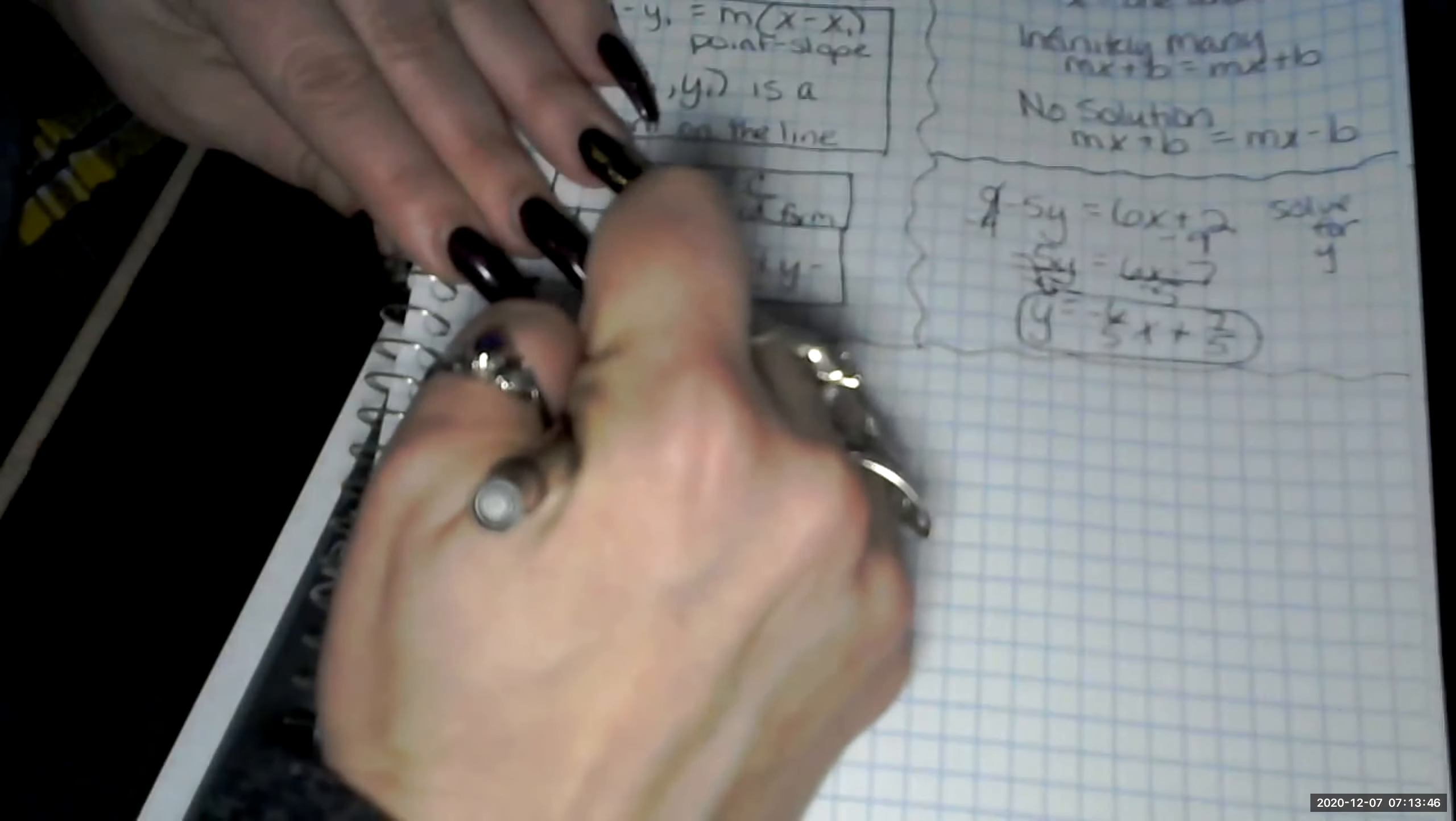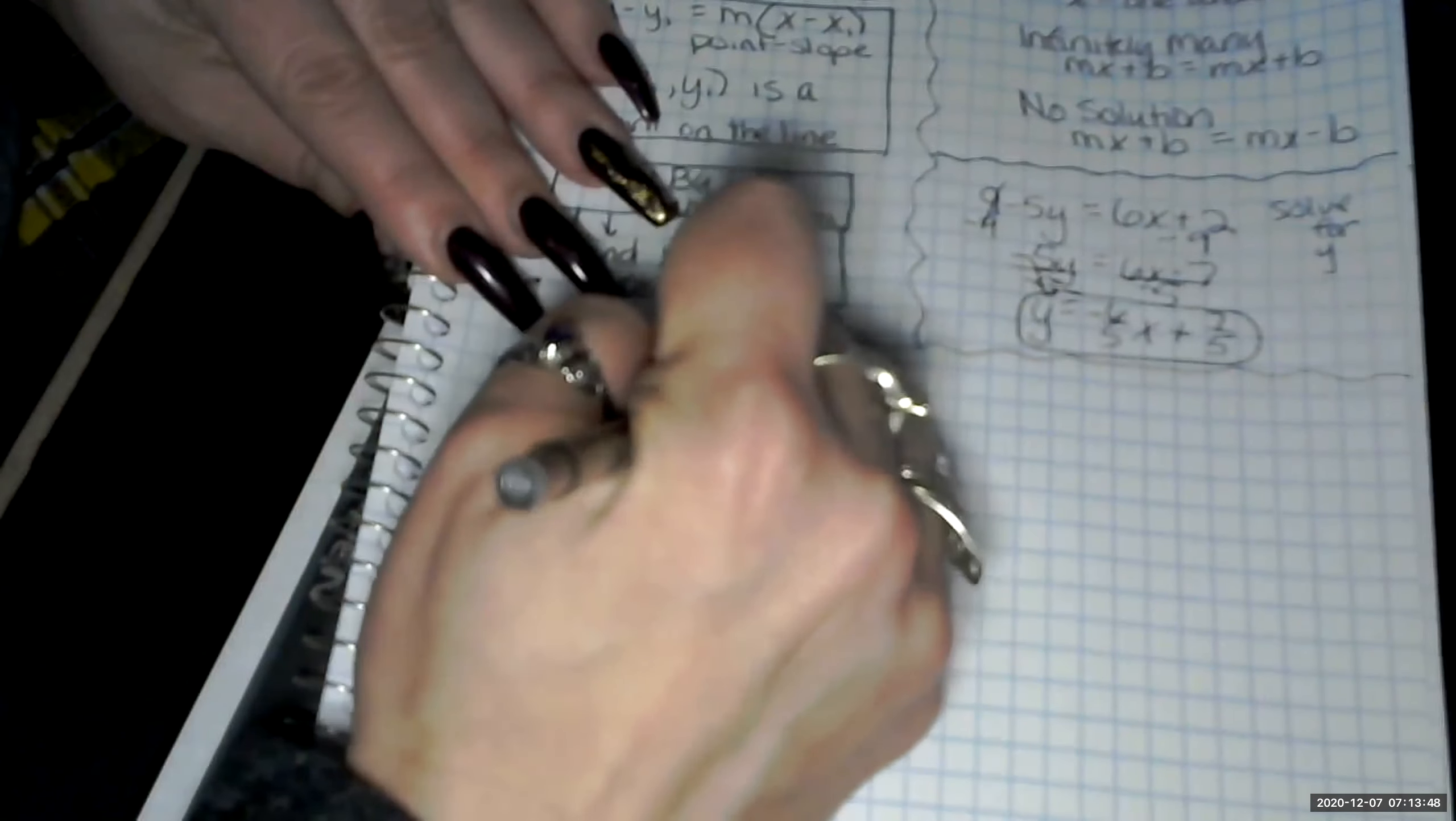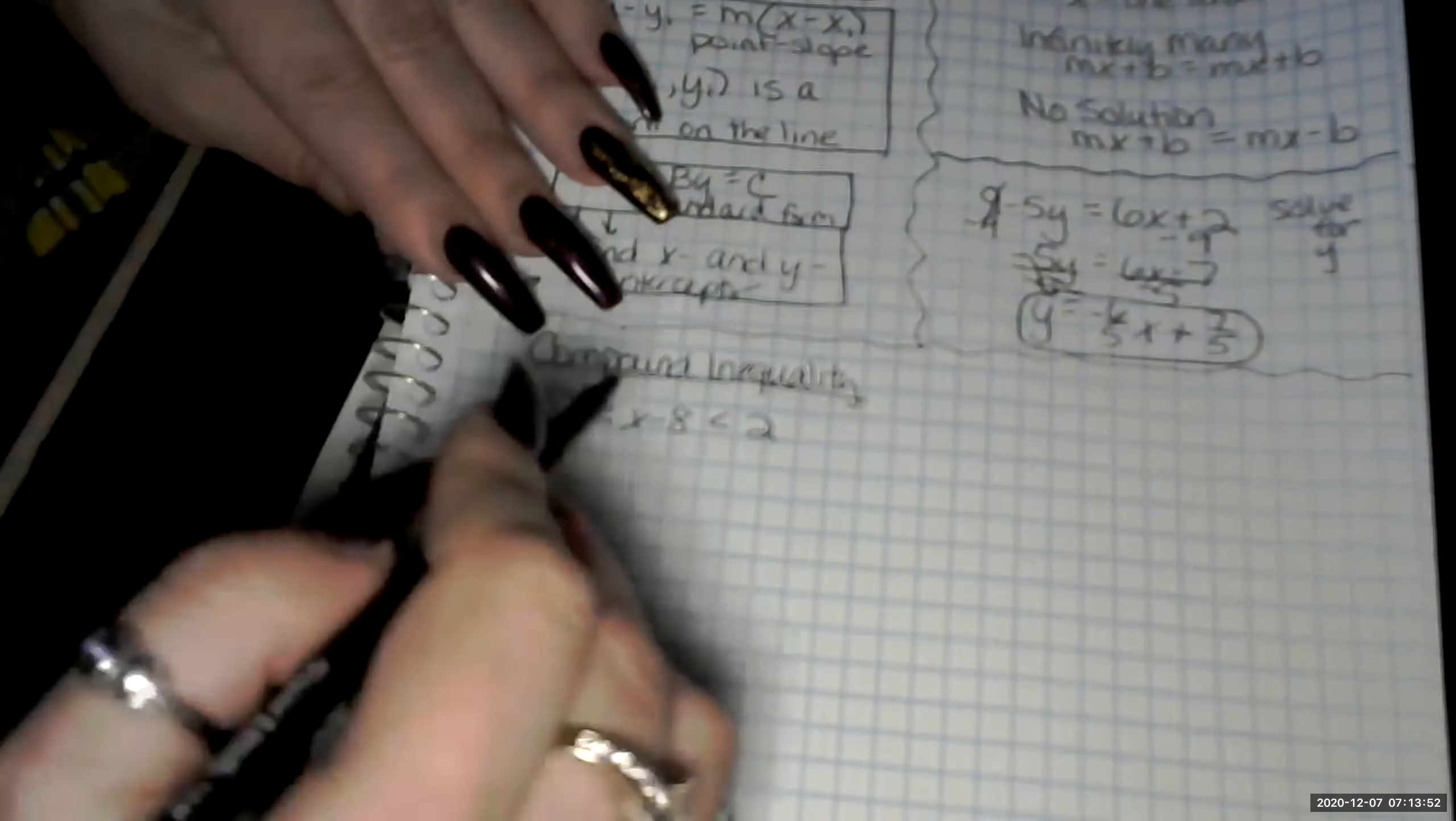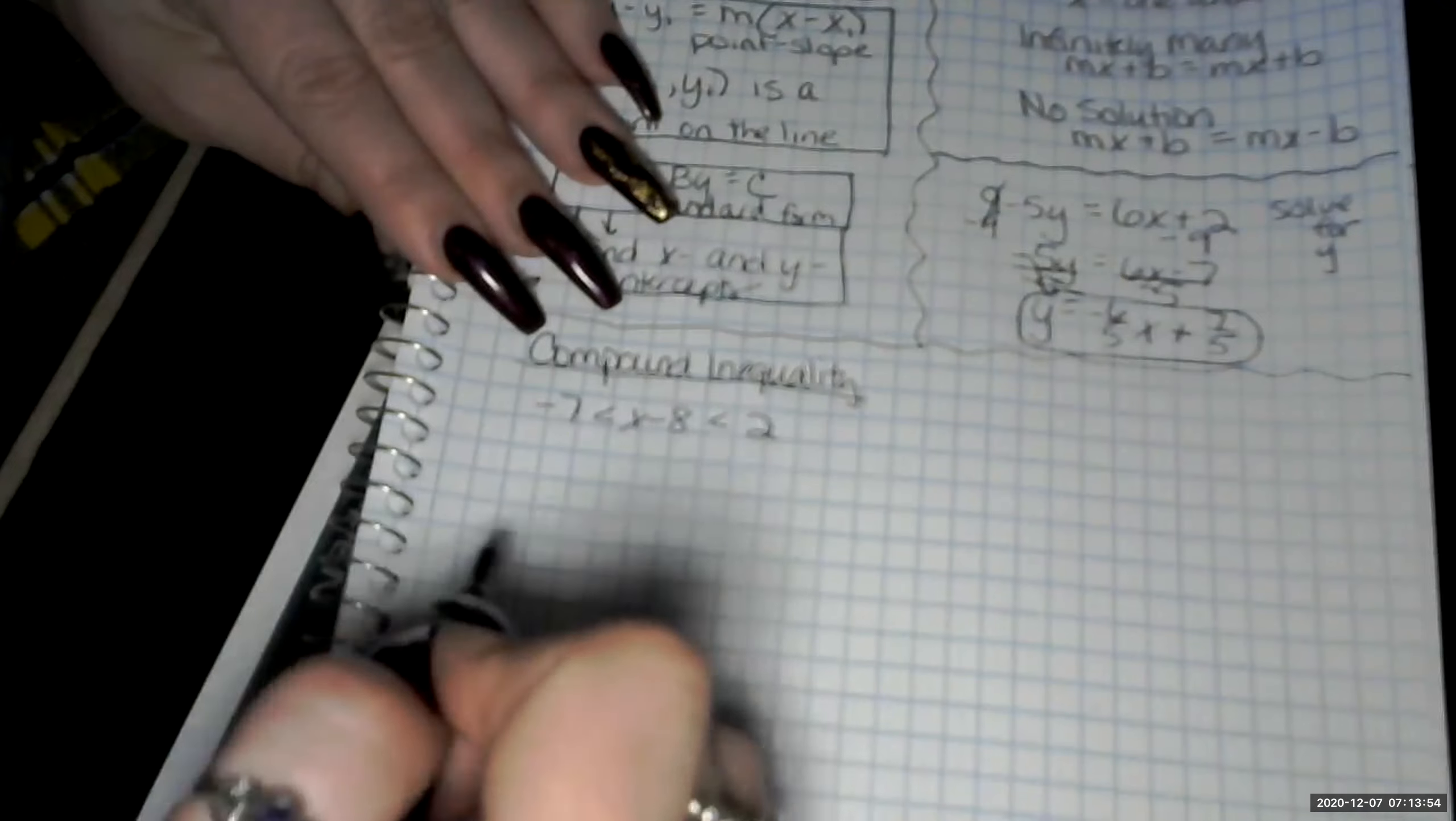So we did negative 7 less than x minus 8, which is less than 2. We solved this. It's really two inequalities. So we solved it like two inequalities.